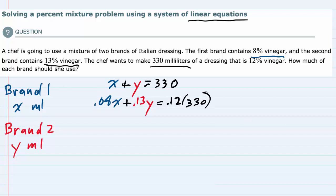For the first equation, we looked at the total volume of 330. For the second equation, we looked at the total amount of vinegar: 8% of x plus 13% of y, giving us 12% of 330.